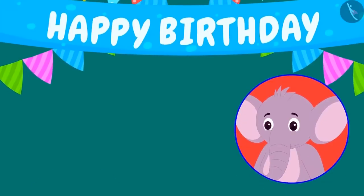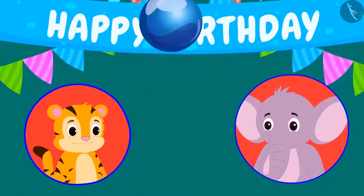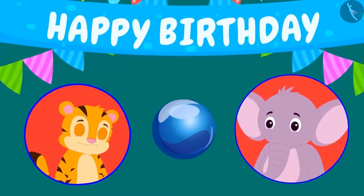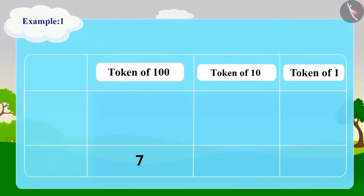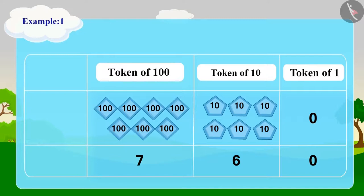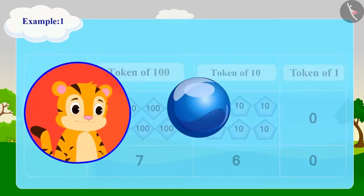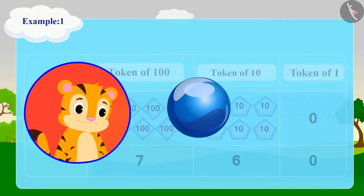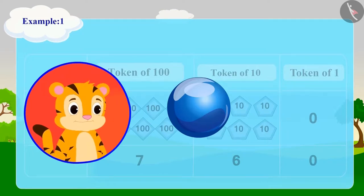Now Appu is counting the marbles given by Sher Khan using tokens. He used seven tokens of 100, six tokens of 10, and zero tokens of one. Can you write the number of marbles given by Sher Khan with these tokens?